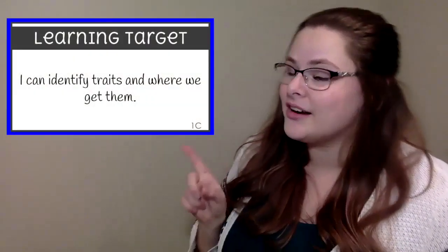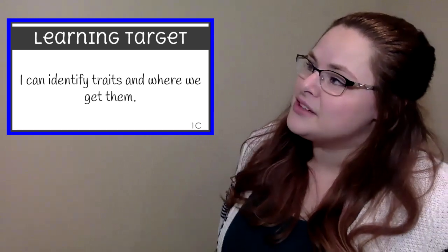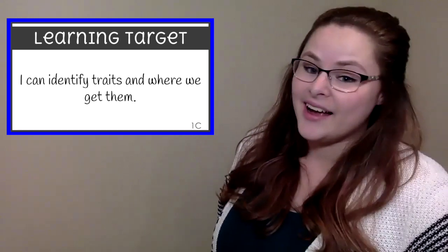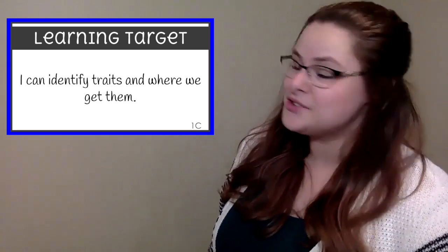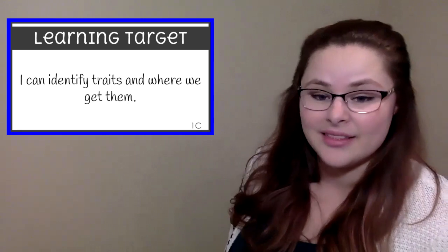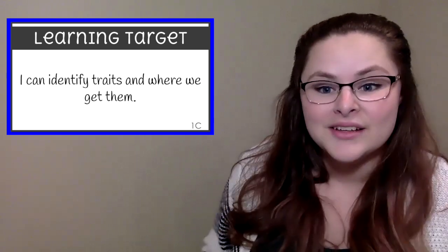Now that we have our observations out of the way, let's start with our learning target. Our learning target for today is: I can identify traits and where we get them. We are going to start a brand new page in our science notebook and we are going to label it 'What is a trait and where do I get it from?'